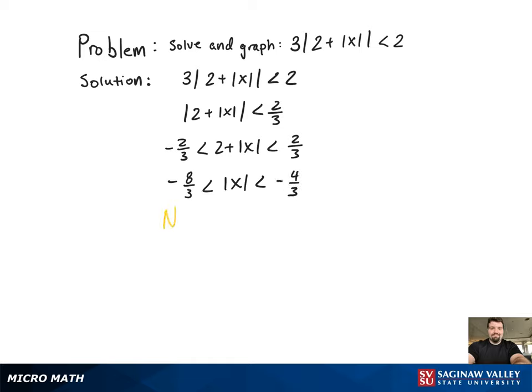What we notice here, though, is that the absolute value can't be between those two values, so we're going to get a no solution. And that's because the absolute value of x has to be greater than or equal to 0, resulting in the empty graph.